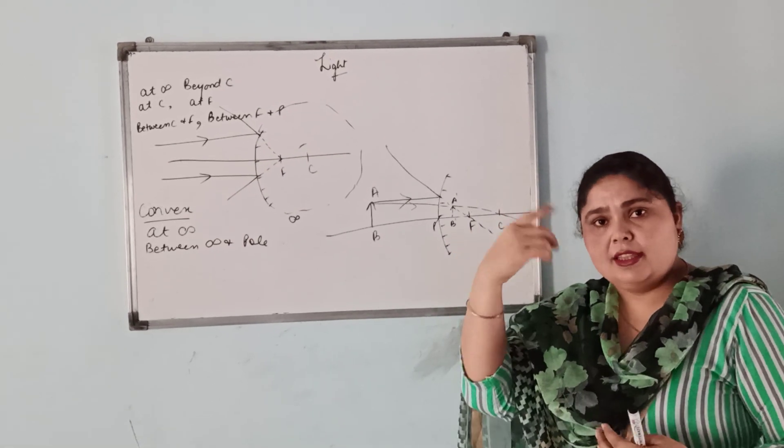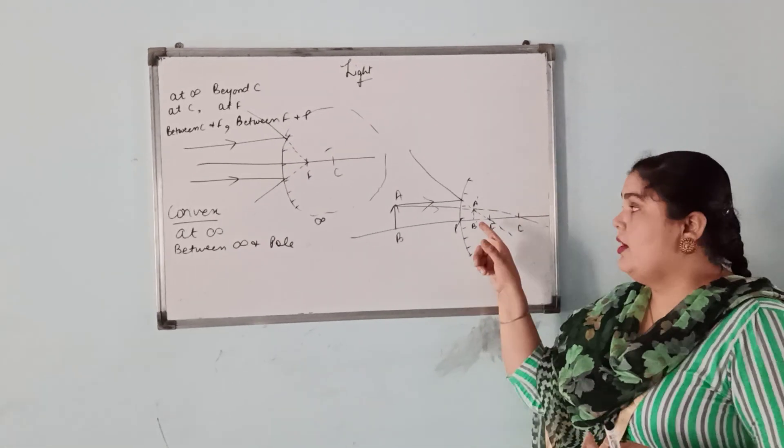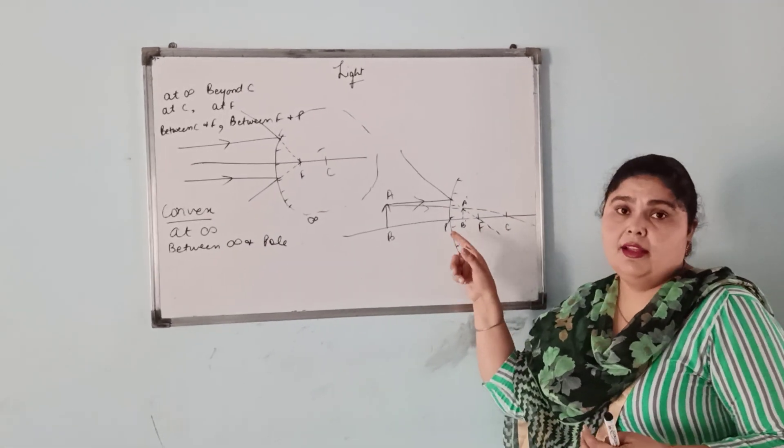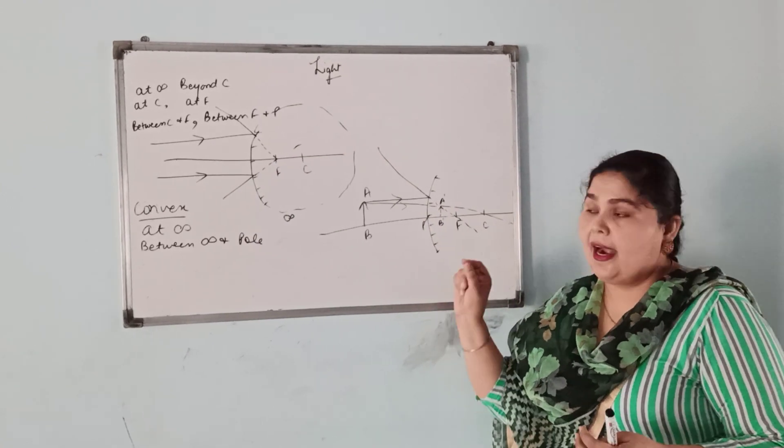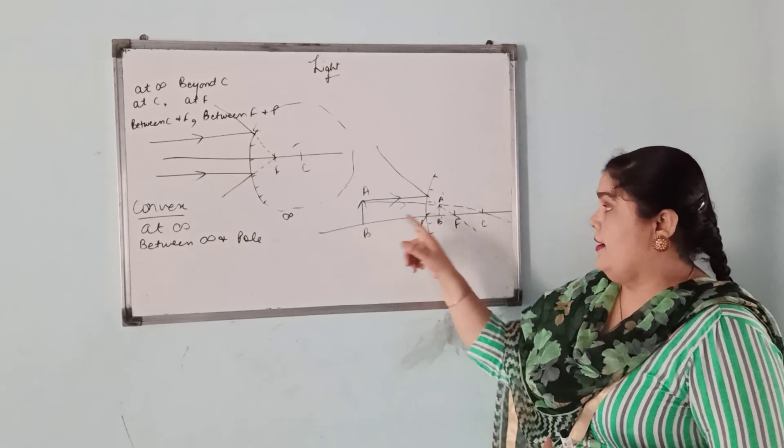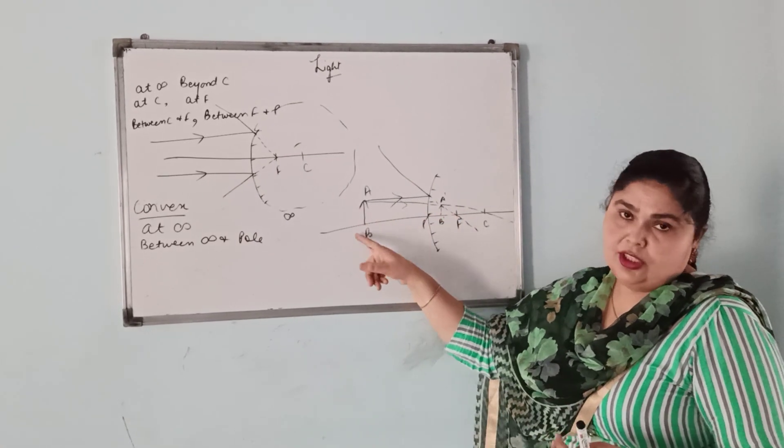The image is straight — erect. This image is virtual and erect and diminished.